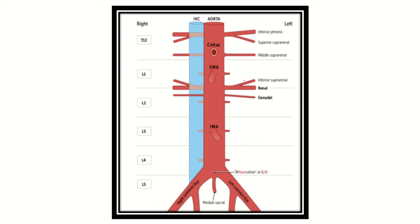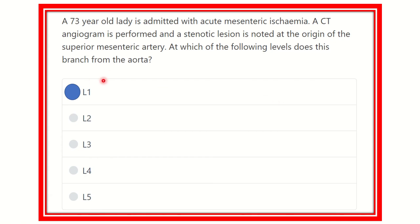This is another view of the abdominal aorta. On the left side we can see the aorta, and on the right side the IVC. There are different branches of the abdominal aorta — anterior, terminal, posterior, and lateral branches. The SMA, the superior mesenteric artery, arises at lumbar vertebral level one. So the answer is that the superior mesenteric artery leaves the abdominal aorta at the level of lumbar one vertebra.